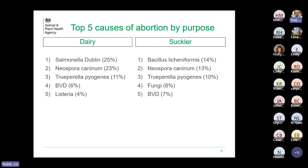Think about why this is — what are these risk factors? It gets your brain ticking when you're going out and taking a history for an investigation. Why might Salmonella be so common in dairy herds and not seen in beef herds? What about Bacillus — why is that so common in beef herds? It's a soil organism that's spore-forming, so that might give you a clue. We'll perhaps have a little discussion at the end about that.